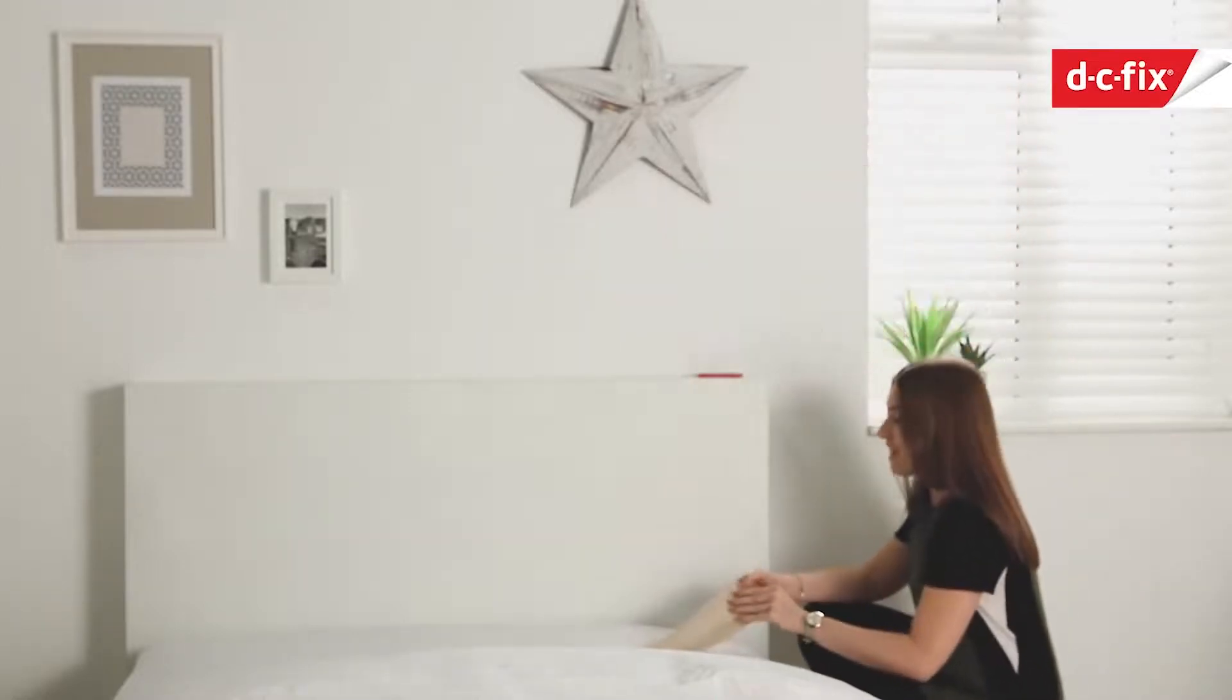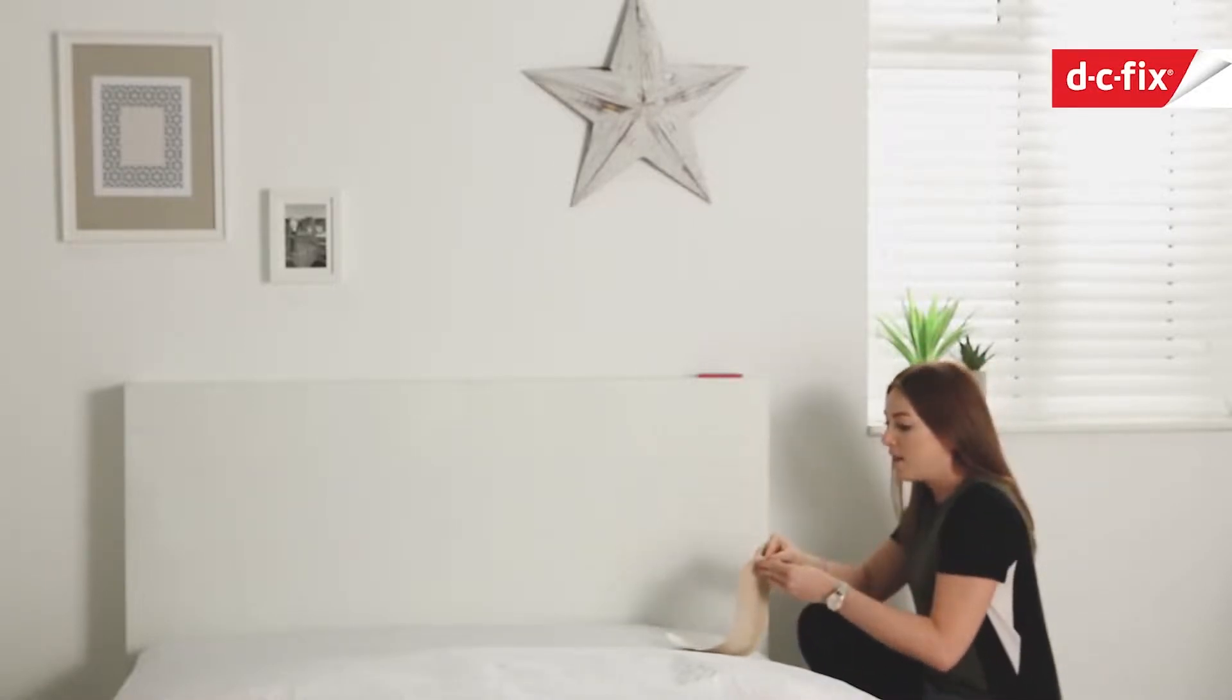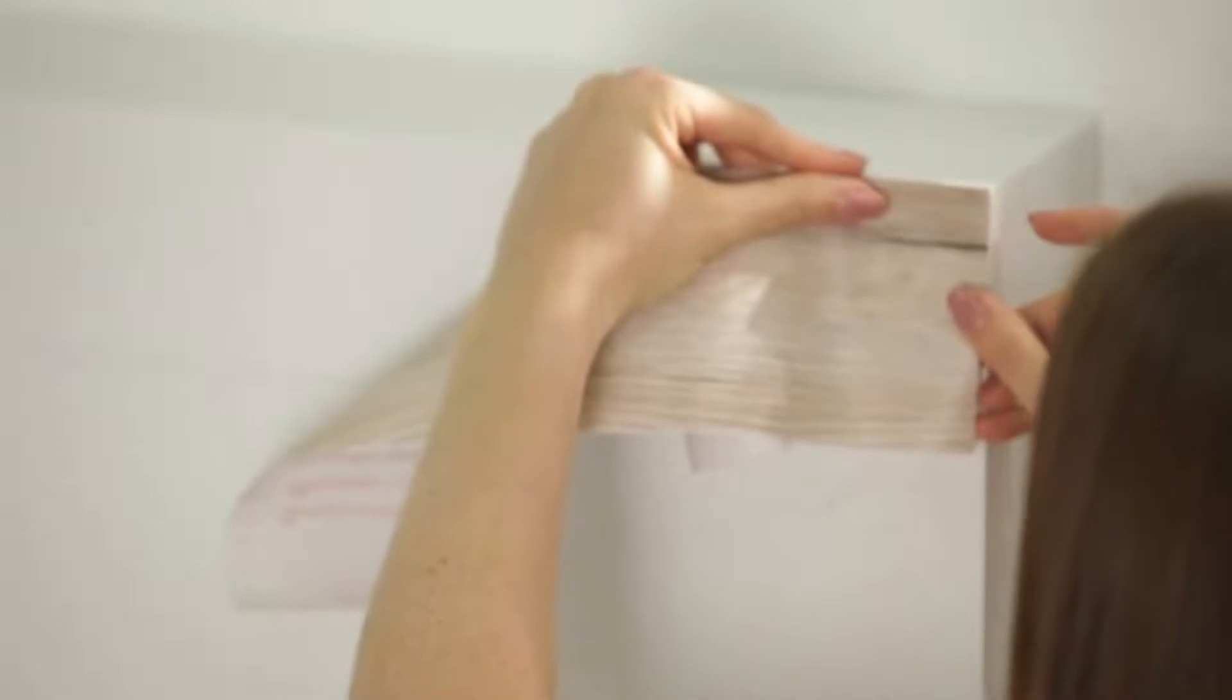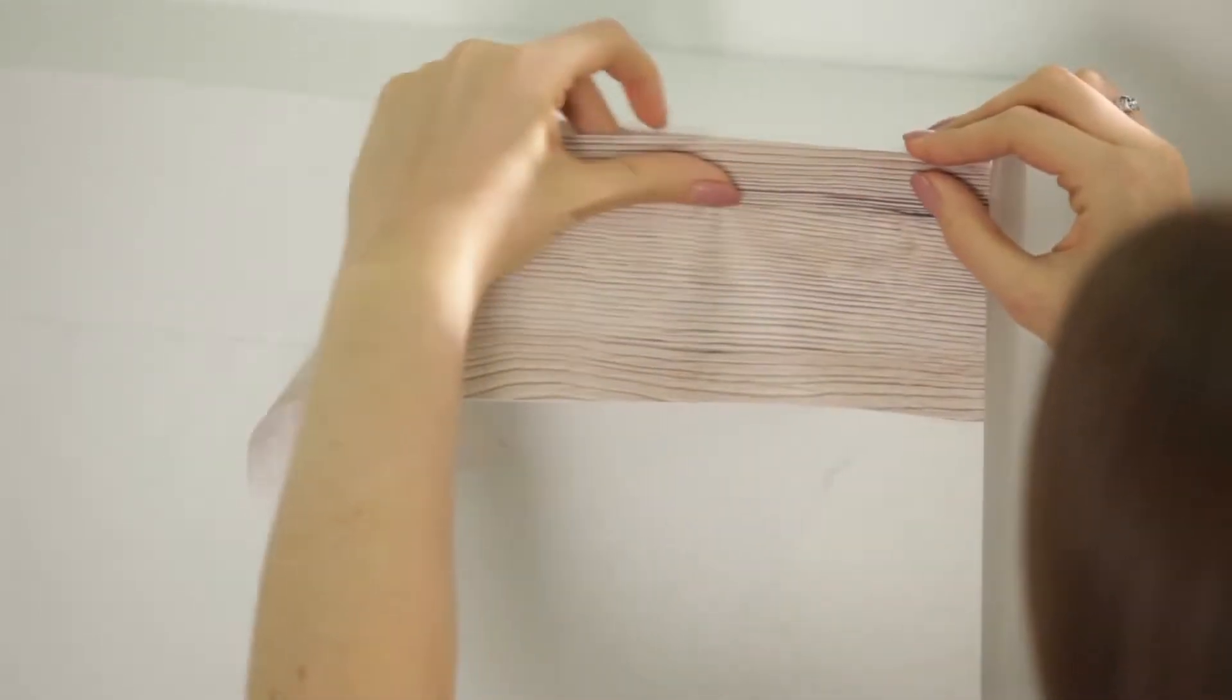Starting with the light brown, and as I said I've drawn that guideline on there so I can use that to line it up. I'm just going to peel back the backing paper. You've got the smoother from the DC fix application kit, and this has got a felt covered side that's black and that's nice and smooth. You can just use it to help get out any little air bubbles that might be trapped underneath the plastic.